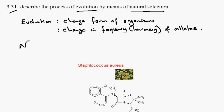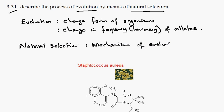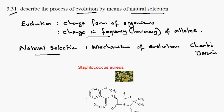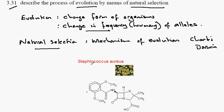Natural selection is the mechanism of evolution and was first proposed by Charles Darwin. In this example I'm going to illustrate a change in allele frequency by means of natural selection, using an example from the past century relating to the treatment of skin infections by the bacteria Staphylococcus aureus.